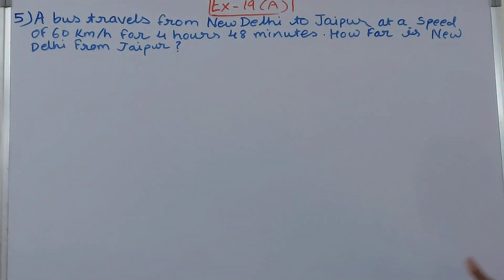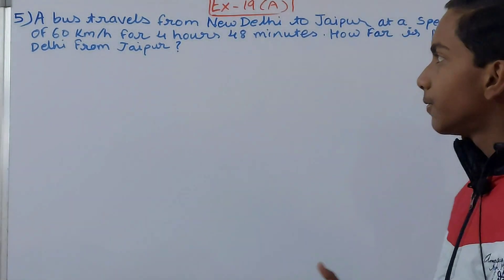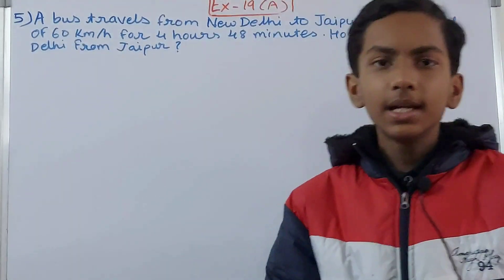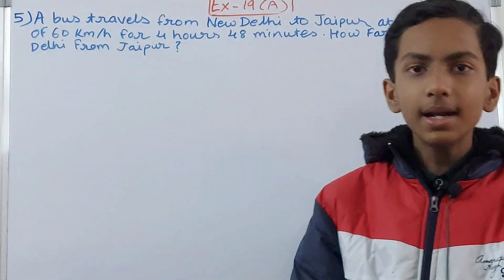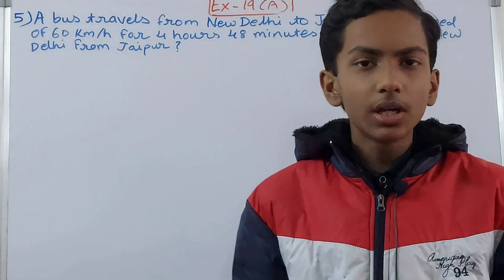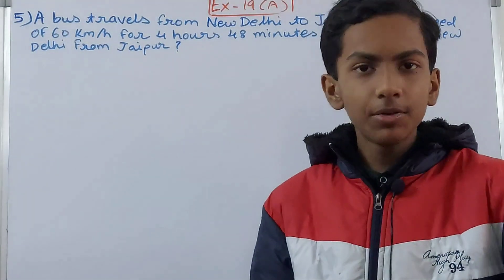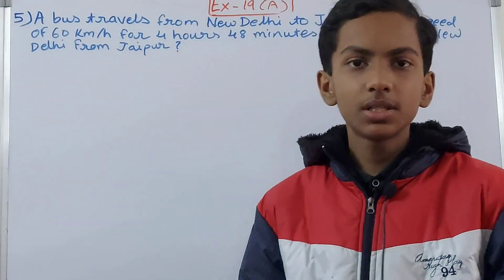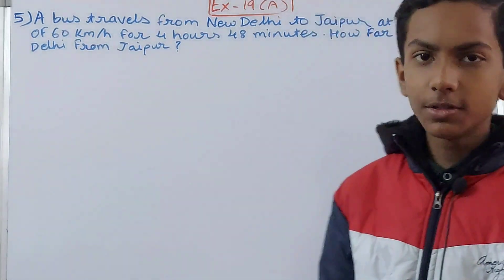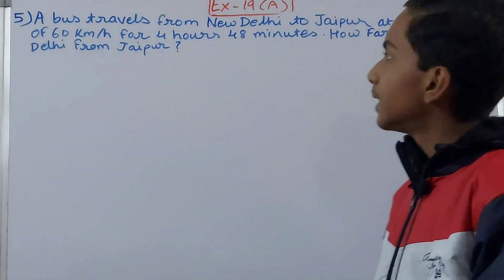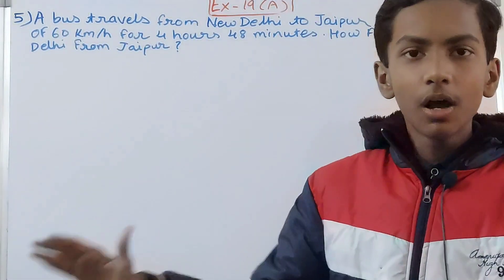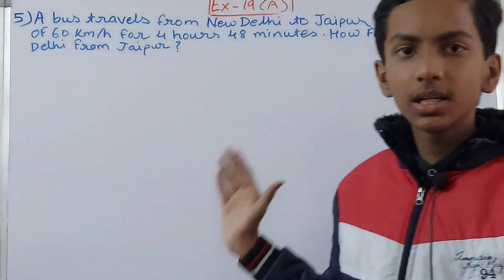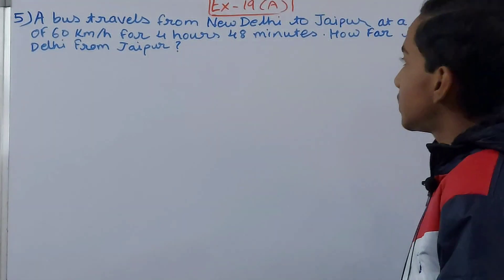The question says: a bus travels from New Delhi to Jaipur at a speed of 60 kilometers per hour for 4 hours 48 minutes — how far is New Delhi from Jaipur? So basically, a bus is traveling between two cities at a uniform speed of 60 kilometers per hour, meaning the speed is constant throughout — it is not increasing nor decreasing.